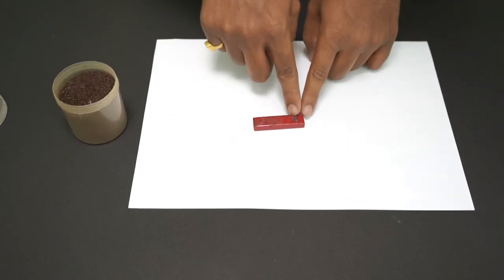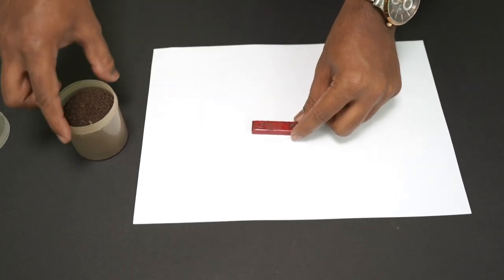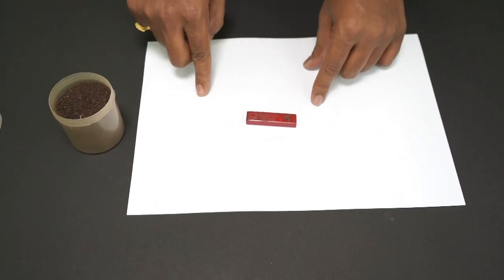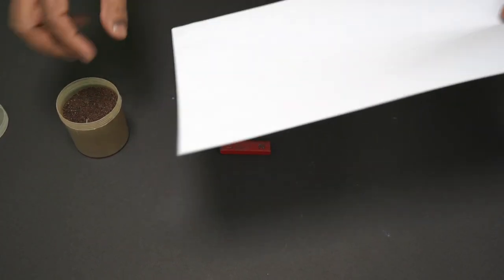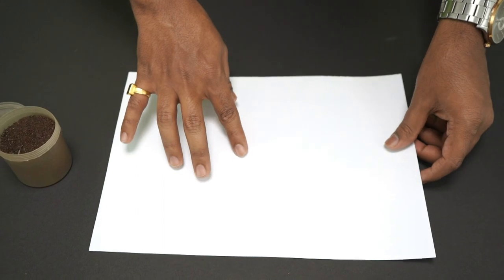So we have a bar magnet here. You see the north and the south poles. Now there is iron powder and there is white paper. So what we do is, we can take the magnet here, place it, then put this paper on top of it.